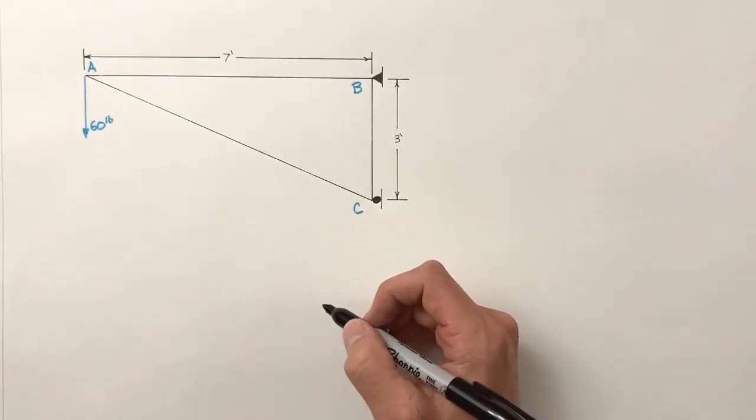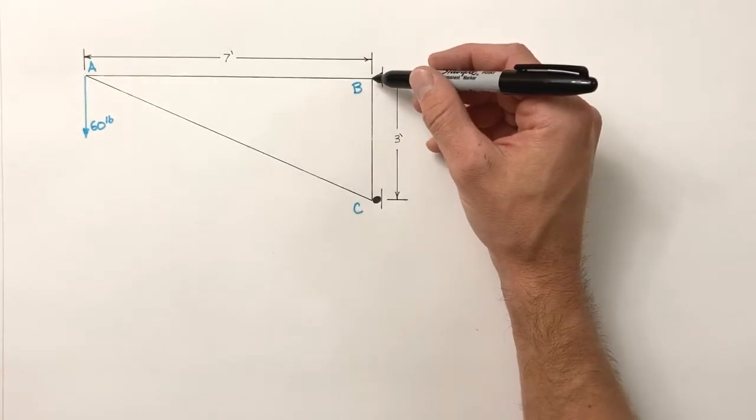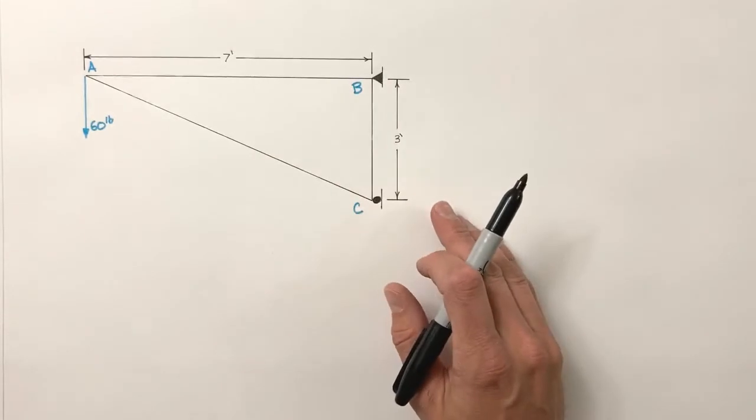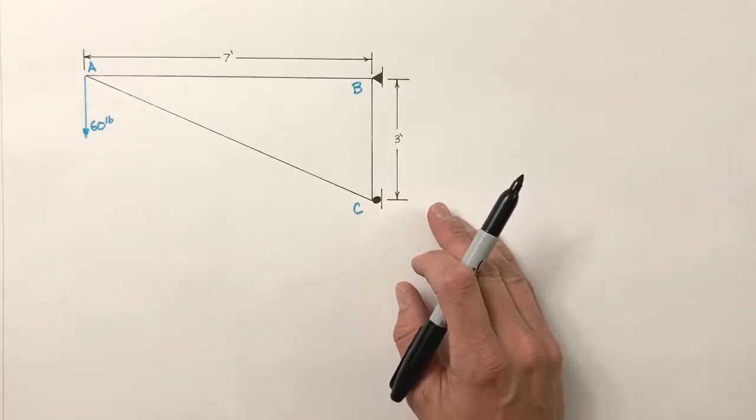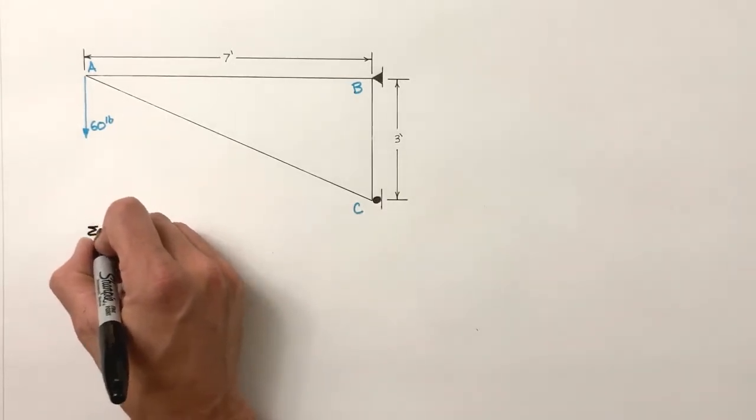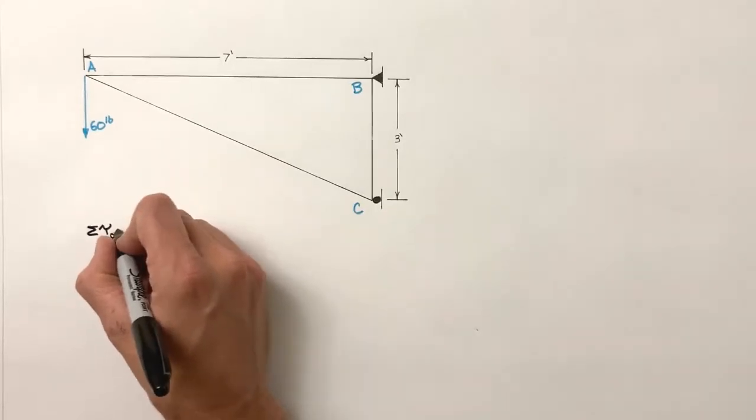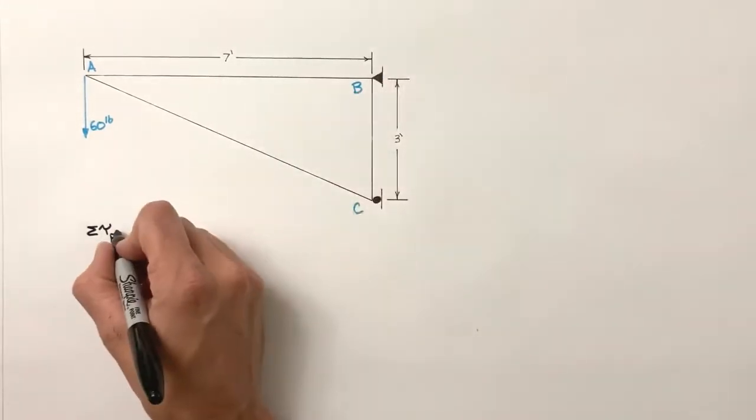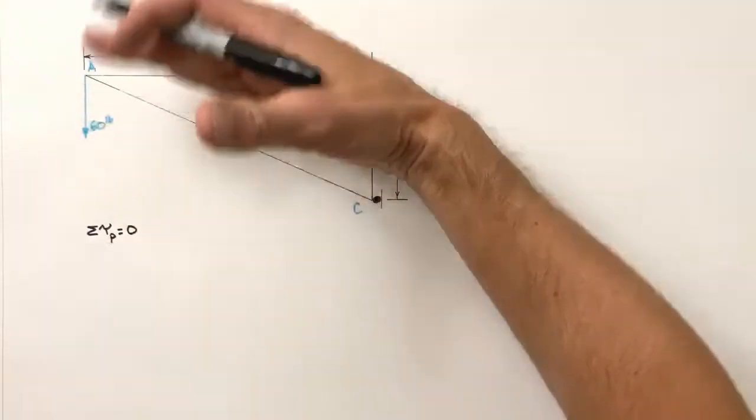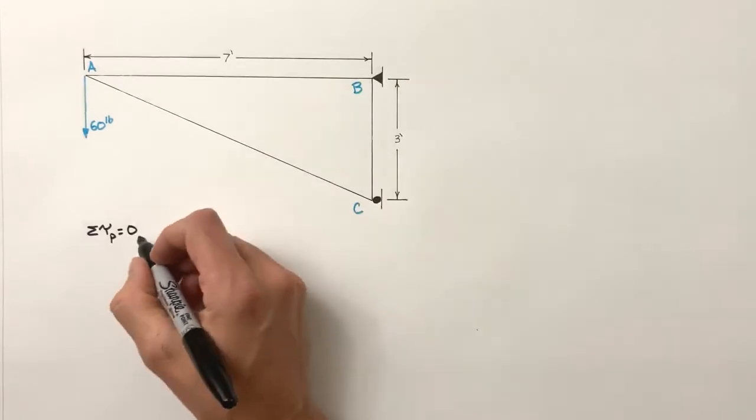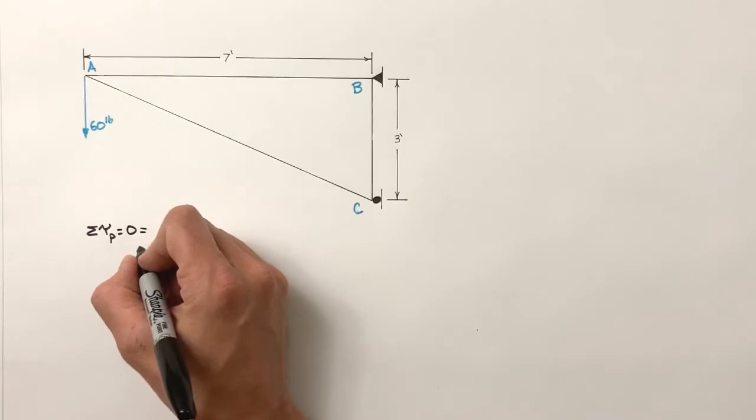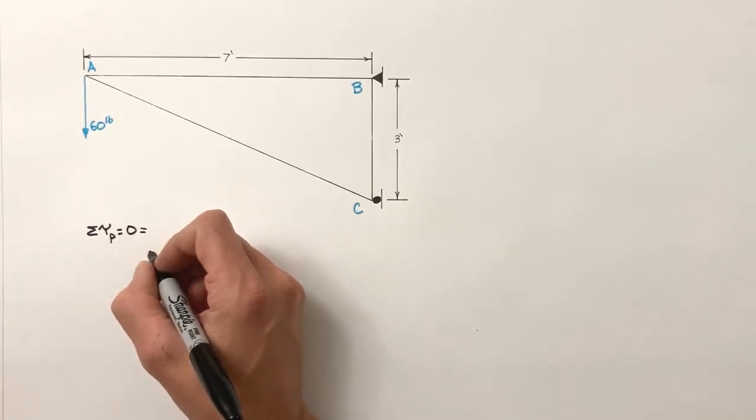So we're going to start this problem just like we would any other problem. We're going to look at the sum of all torques around the pin and then the sum of all torques around the roller. We know the sum of all torques around each support needs to be zero. If it doesn't equal zero, that means this truss is going to rotate and that would mean it's a failing truss and you are now an unemployed engineer, or you're building drawbridges.